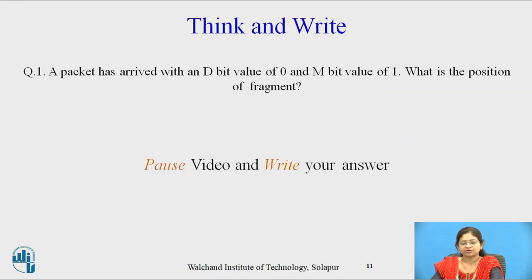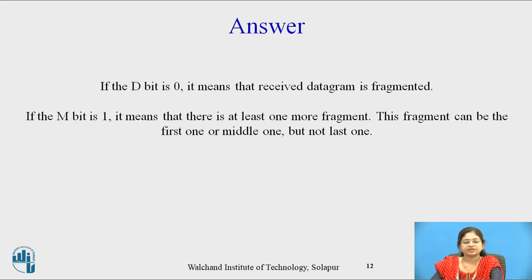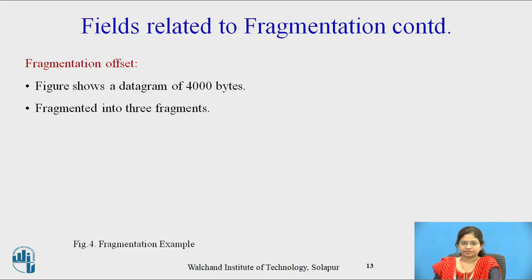A packet has arrived with a D bit value of 0 and M bit value of 1. What is the position of the fragment? If the D bit is 0, it means the received datagram is fragmented. If the M bit is 1, it means there is at least one more fragment. The fragment can be the first one or a middle one, but not the last one.